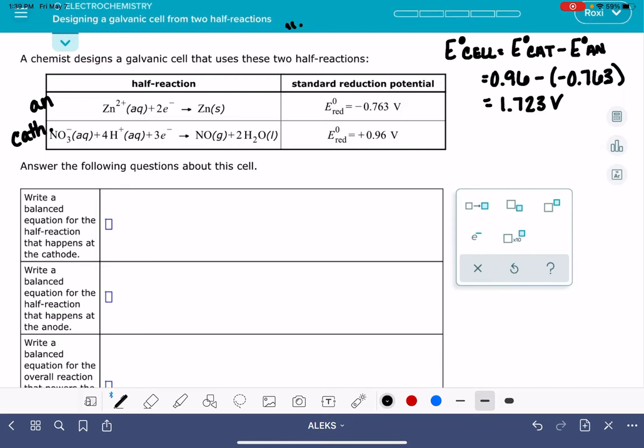We know our trick, red cat, and that red cat trick reminds us that the cathode is where the reduction takes place and the anode is where the oxidation takes place. And we're going to use all of these tricks together.